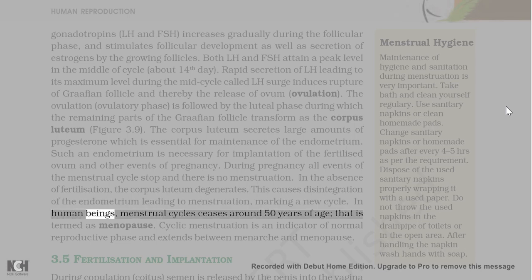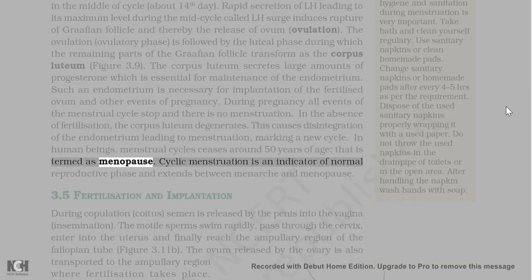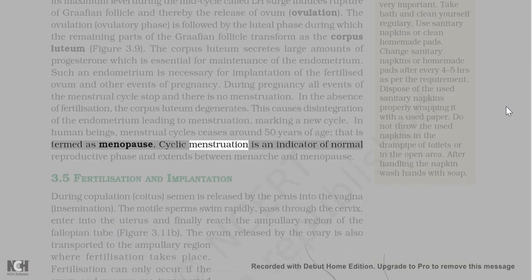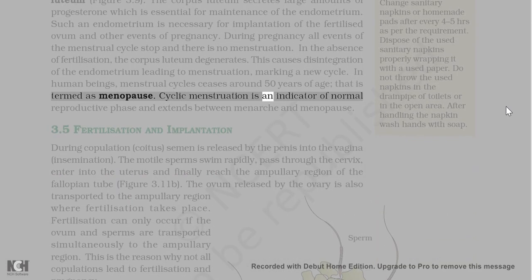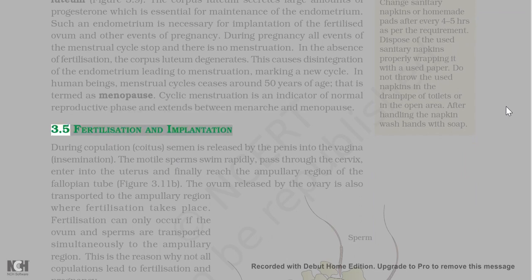In human beings, menstrual cycle ceases around 50 years of age, which is termed as menopause. Cyclic menstruation is an indicator of normal reproductive phase and extends between menarche and menopause.